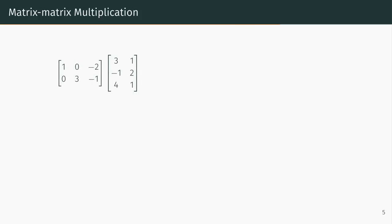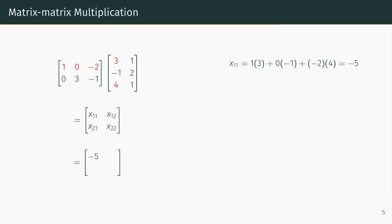Let's look at an example. The 2×3 matrix times the 3×2 matrix shown will result in a 2×2 matrix. Using the row interpretation of matrix-vector multiplication, we can compute this matrix product entry by entry. The 1-1 entry is obtained as a dot product of the first row of the first matrix with the first column of the second matrix. The 2-1 entry is obtained as a dot product of the second row of the first matrix with the first column of the second matrix, and so on.